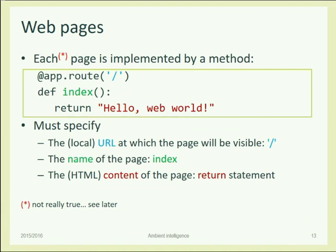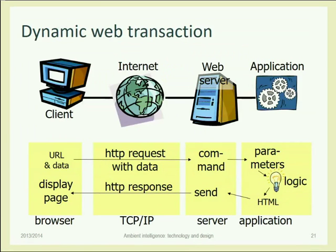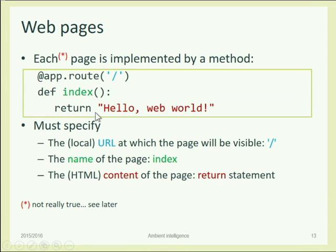What does this Python function need to do? It may do whatever it wants, but in the end it must generate some HTML. It will return a string, and this string will contain the body of the response. In most cases the body will be an HTML string. This is the basic flow.